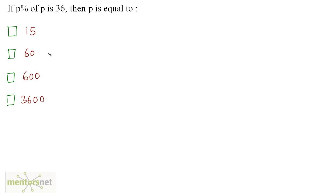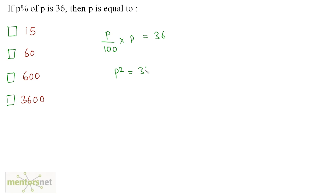If P percent of P is 36, then P is equal to? We have been given P percent of P, so we can write P upon 100 times P equals 36. So P squared is equal to 36 times 100, that is 3600.